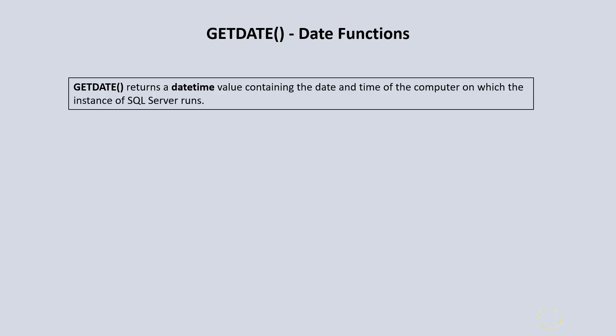Next, let's take a look at some date functions. The first date function we will review is the getDate function. GetDate is used to return a date and time value. The data type is datetime, and it returns the date and the time of the computer on which the instance of SQL Server runs — in other words, it returns the date and time on your computer.